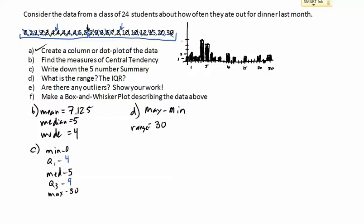Now we need the IQR, which is the interquartile range — the range between the inside quartiles. The IQR is Q3 minus Q1. Q3 will always be bigger because 75% of the data is below it, while only 25% is below Q1. So we go 9 minus 4, and the IQR is 5.